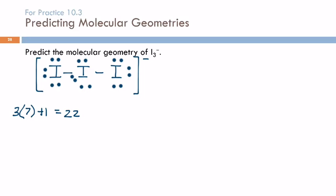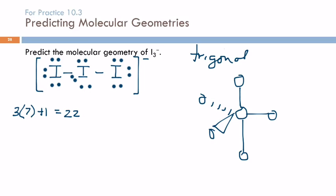How many groups around the central atom? Five. Five groups. So five groups makes what shape? Trigonal bipyramidal. So electron geometry, trigonal bipyramidal.